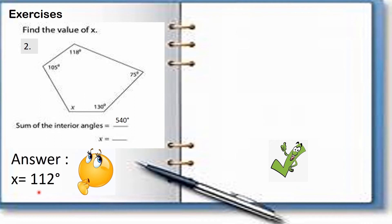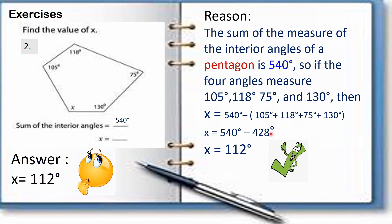When we add all five angles — 112, 105, 118, 75, and 130 degrees — the sum is 540 degrees. So our answer is correct.